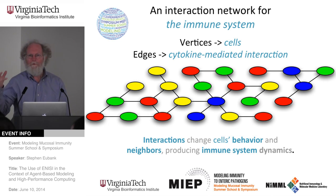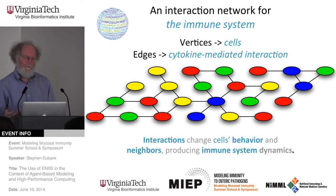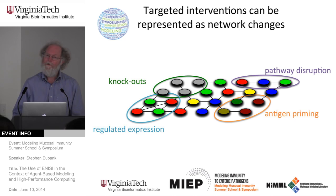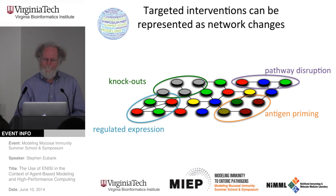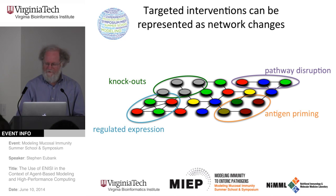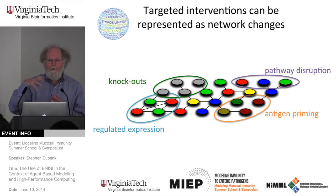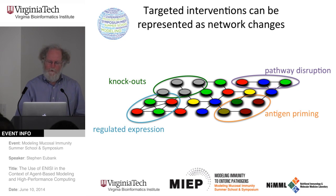It's not just that we have a model representing the way things are operating right now. Because we have a causal, explanatory model, we can represent things like changing parts of the system. I can build a knockout animal and represent what that knockout does in the agent-based model — maybe it changes the states of some cells and changes what their interactions can be. I can prime some cells with antigen, I can regulate expression. Anything you can imagine doing in your experimental setup, I can do to the model, as long as the model is sufficiently powerful.